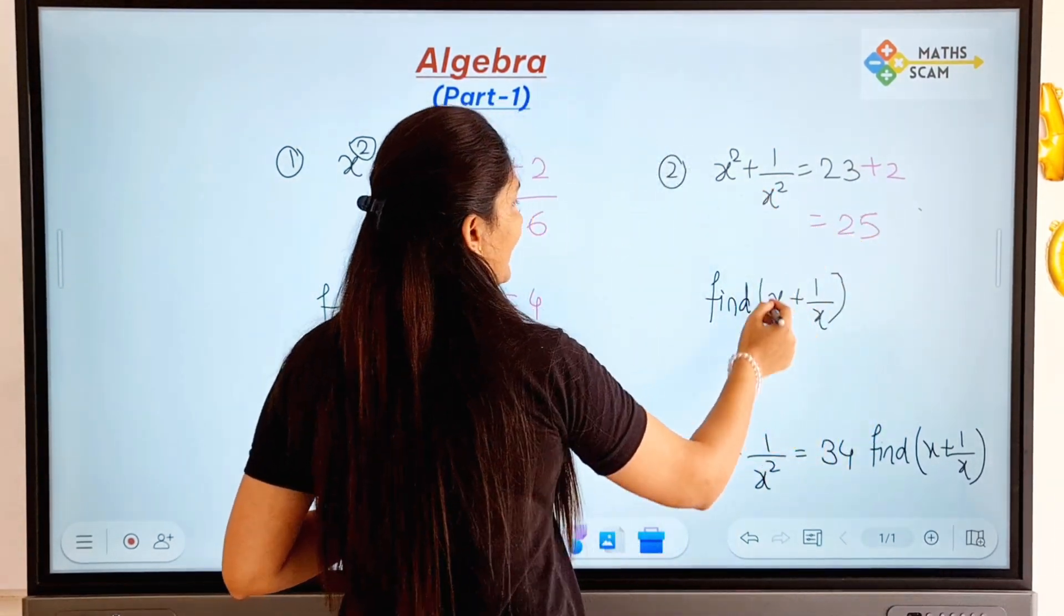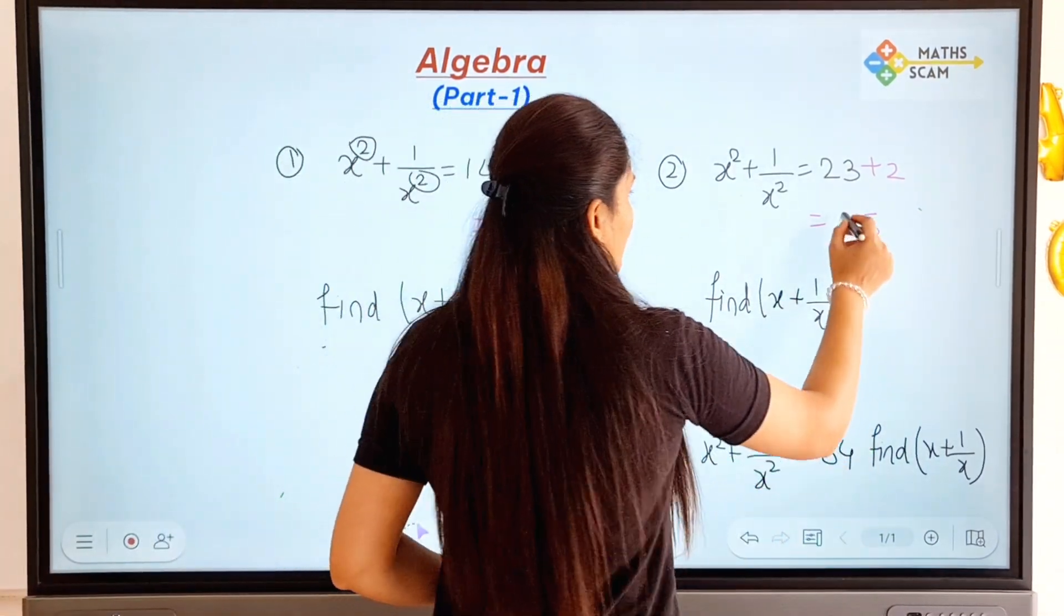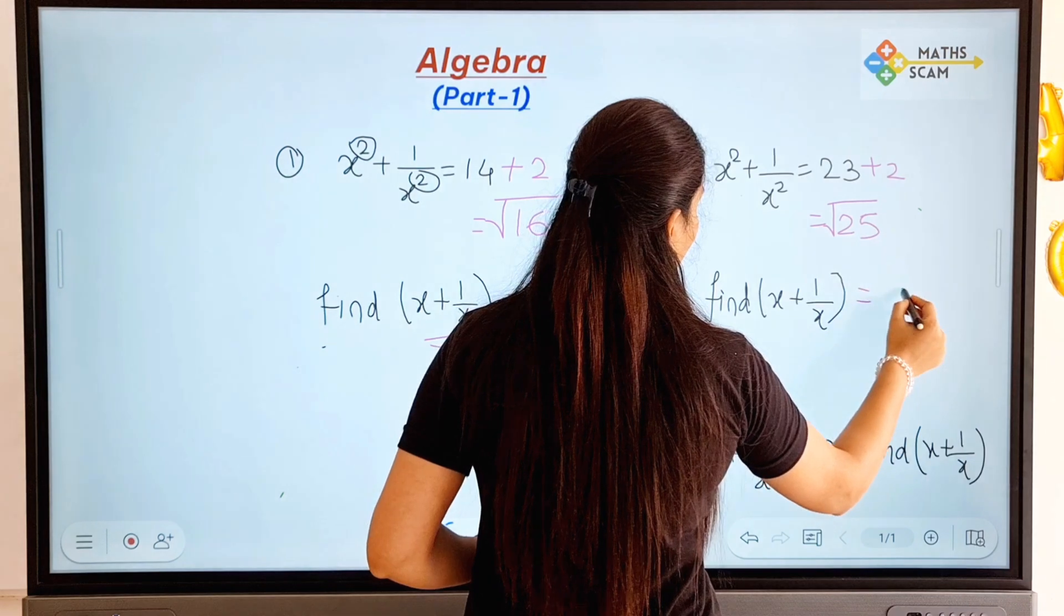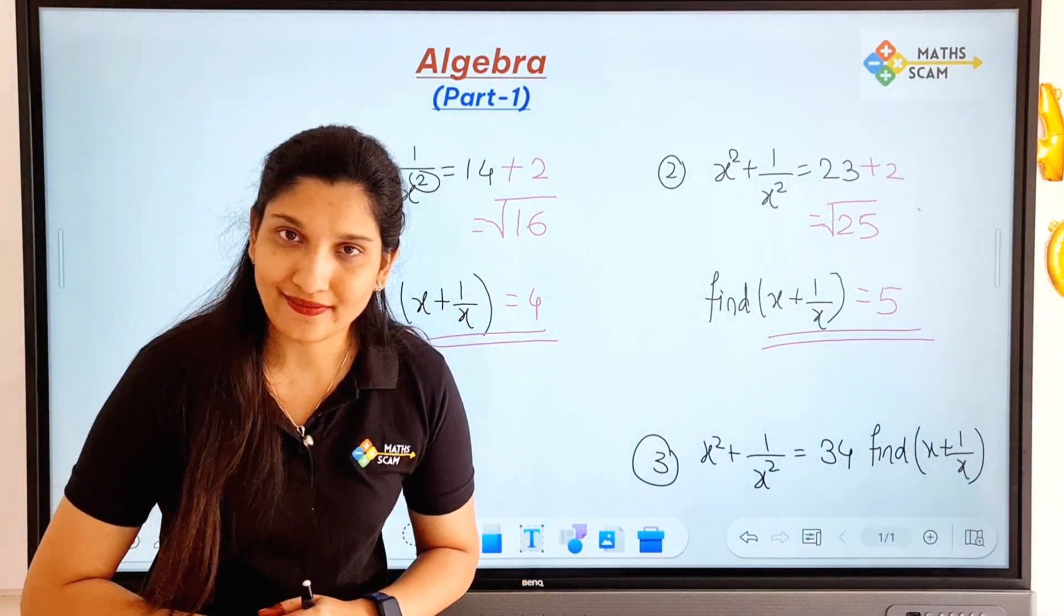Here we have square, here we have without square, that means let's find the square root. So square root of 25 is 5, so the value of x + 1/x is equal to 5. Correct.